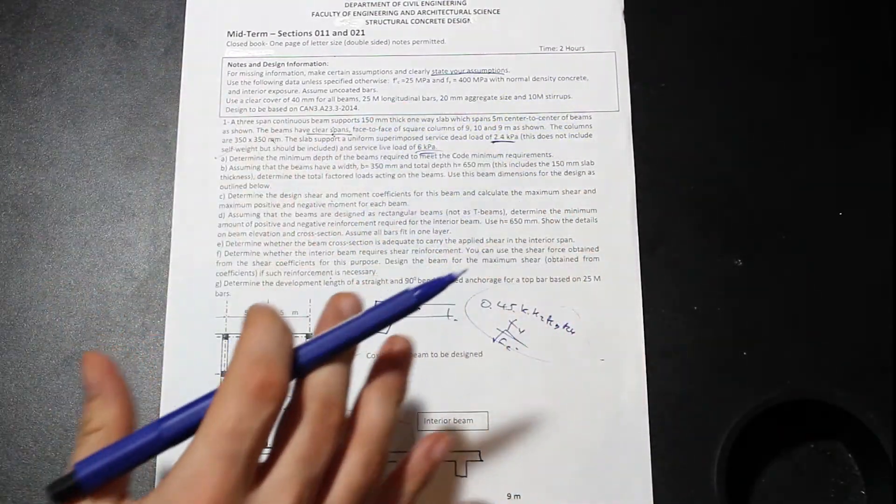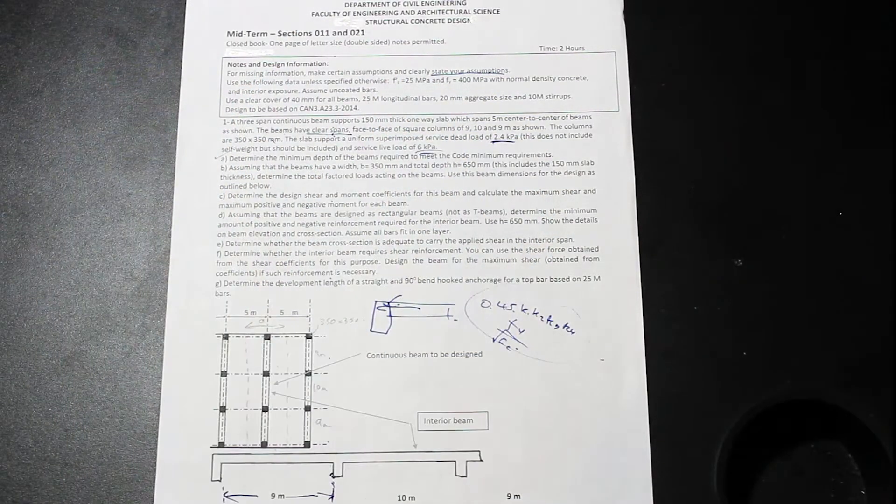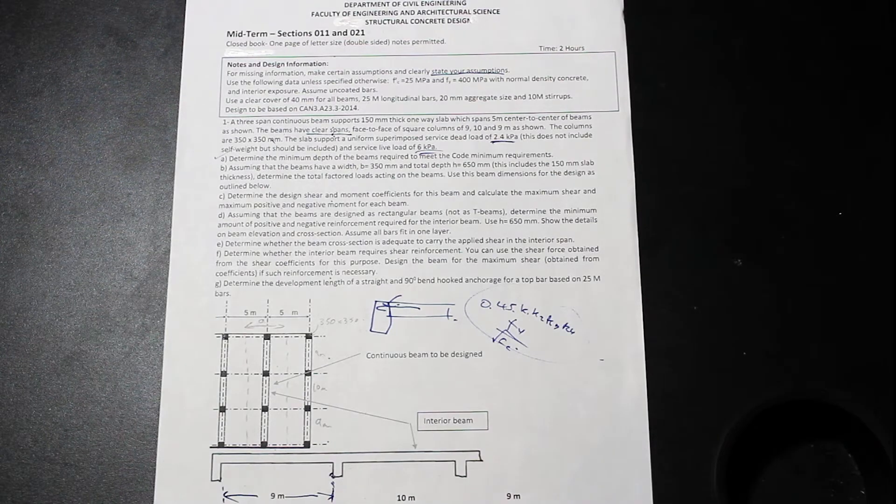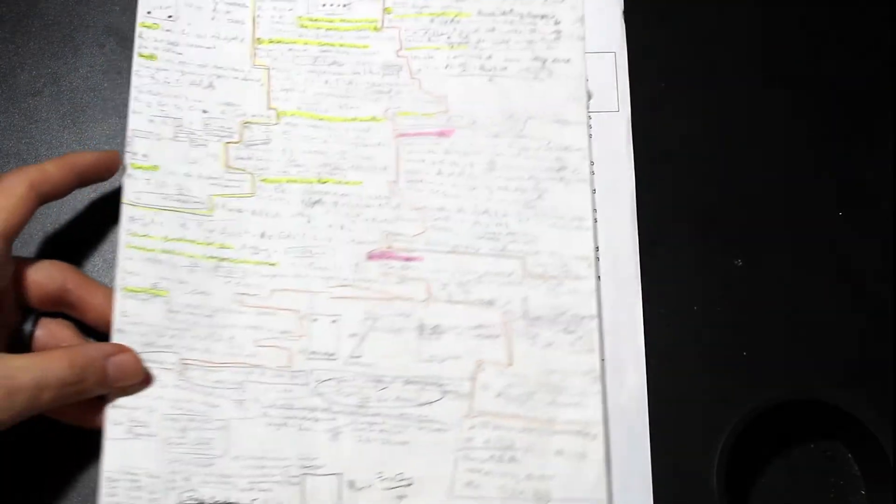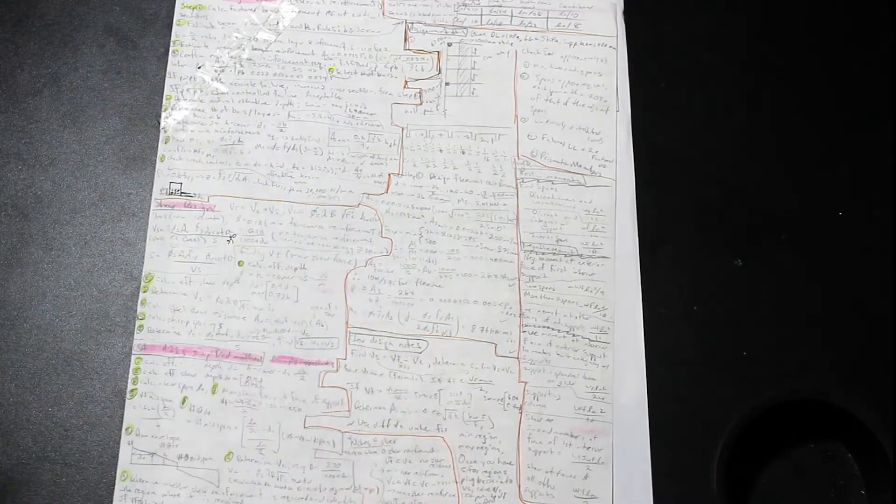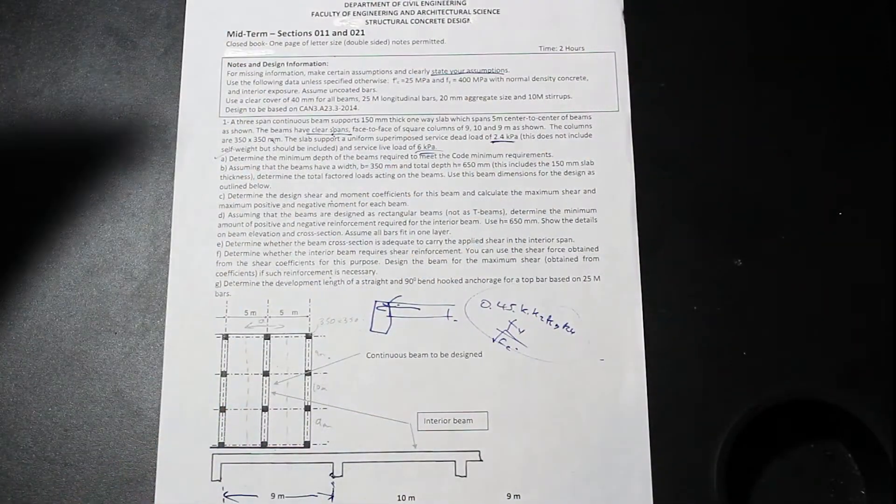And then when you get into the later years, it starts to kind of get into more of, like, a code-based program. So you're designing everything according to the building code, according to the national concrete code, steel code, and you're not, and a lot of the courses are actually based on this. So that's kind of where this degree goes. And I just wanted to show you, before we continue, this cheat sheet that we were allowed to use. So in this class, we were actually allowed to use a double-sided cheat sheet, and I tried to fit as much stuff on here as you can see.